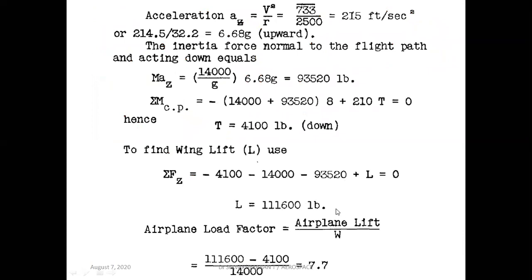L is the wing lift. The airplane load factor is the overall airplane lift divided by W. When we say overall airplane lift, we must consider the tail load as well: wing lift minus the tail load of 4,100 divided by the weight of 14,000 gives a load factor of 7.7. If the tail load is not given, simply take it as L/W; since it is given and acts downward, we subtract it.